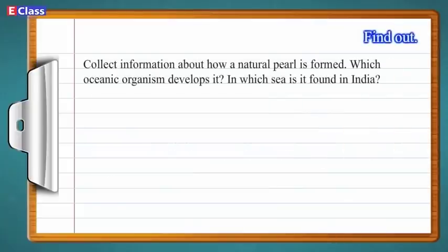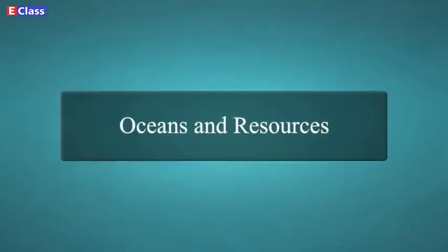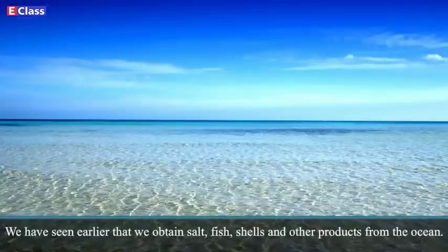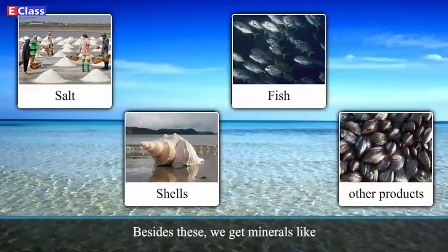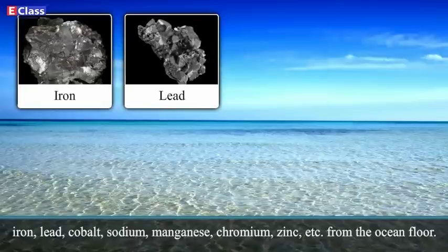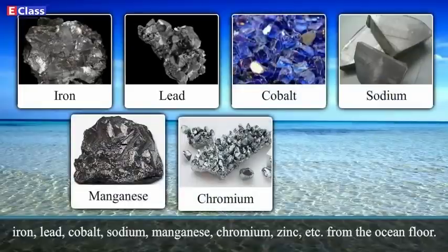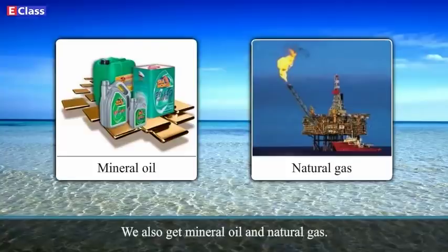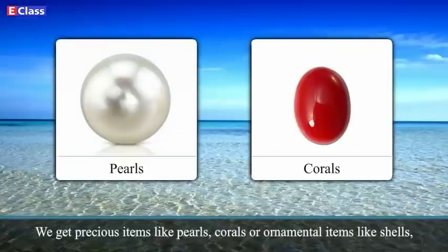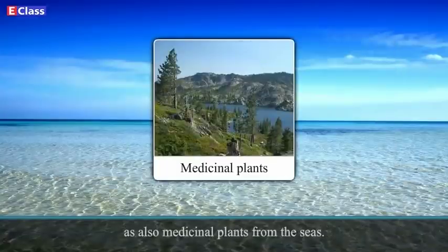Find out: Collect information about how a natural pearl is formed. Which oceanic organism develops it? In which sea is it found in India? We obtain salt, fish, shells and other products from the ocean. Besides these, we get minerals like iron, lead, cobalt, sodium, manganese, chromium, zinc etc. from the ocean floor. We also get mineral oil and natural gas. We get precious items like pearls, corals, ornamental items like shells, and also medicinal plants from the seas.